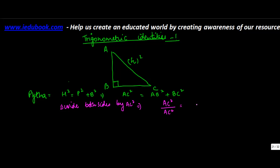Or you can rewrite this side of the equation as AB² upon AC² plus BC² upon AC². Both of them cancel out each other, so let's put this as 1 on the left side.